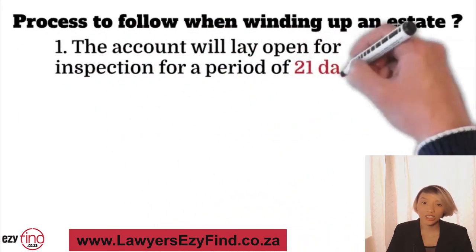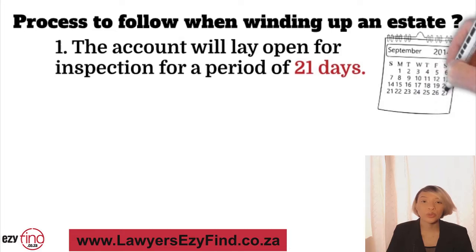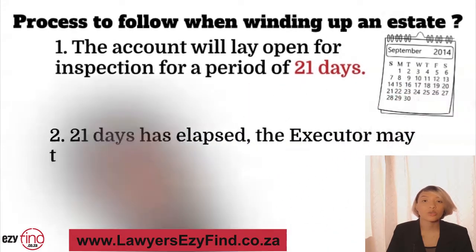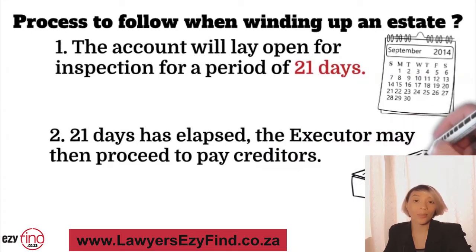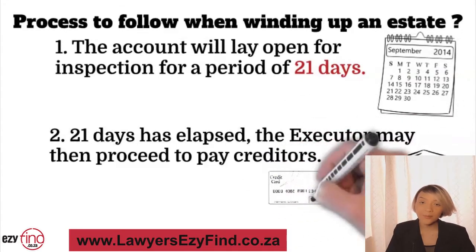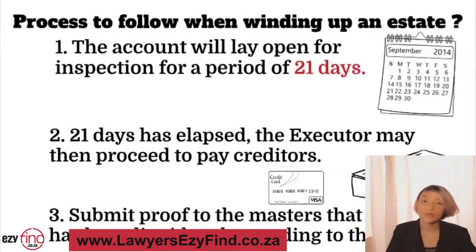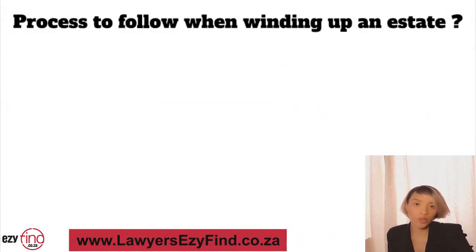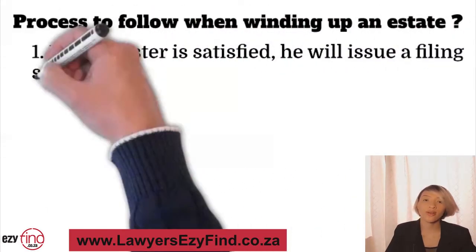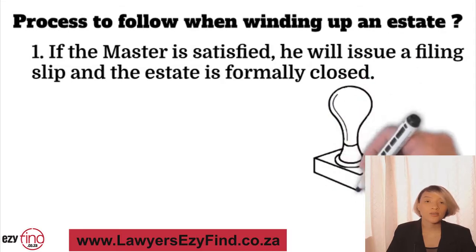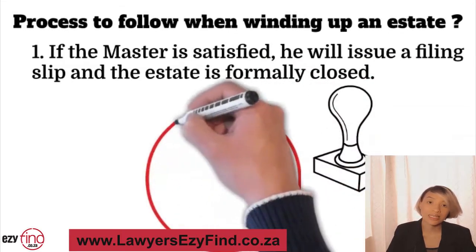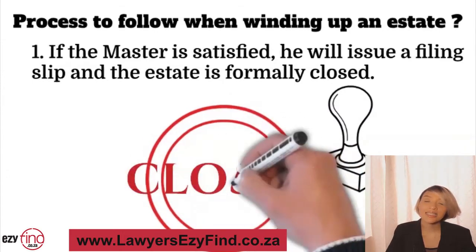Once the master has approved the account, the executor places a section 35 advertisement in a local newspaper and the government gazette. This account will lay open for inspection for a period of 21 days from the publication date. Any interested party may lodge an objection with reasons to the master before the inspection period expires. If no objections are raised and the 21 days has lapsed, the executor may proceed to pay creditors and distribute the estate in accordance with the liquidation and distribution account. The executor must then submit proof to the master that the estate has been liquidated, after which the master issues a filing slip and the estate is formally closed.